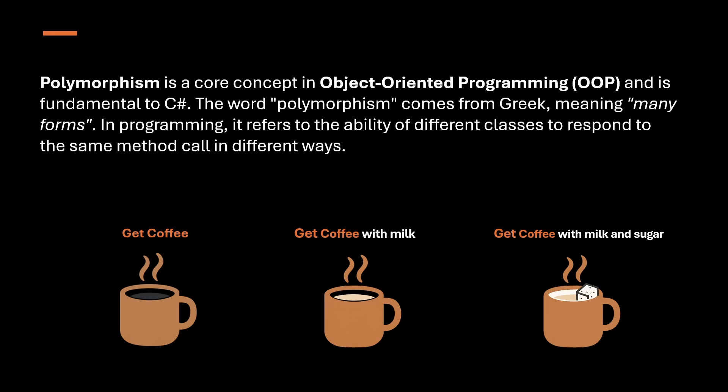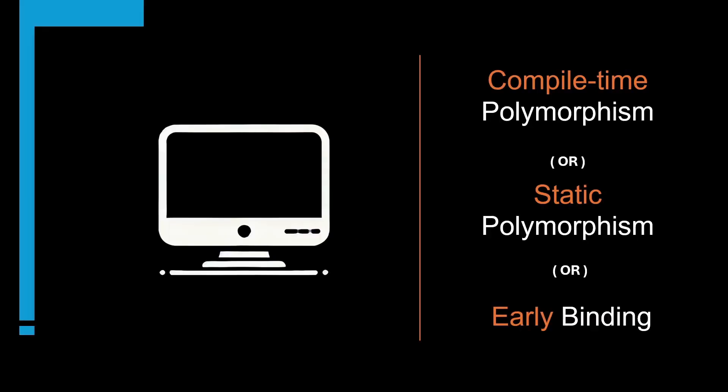In C#, polymorphism can be achieved through method overloading, which is compile-time polymorphism, and method overriding, which is used in runtime polymorphism. Compile-time polymorphism is also known as static polymorphism or early binding — all three names mean the same thing, and we'll see why when we look at the example.